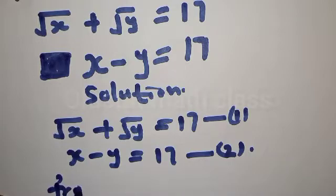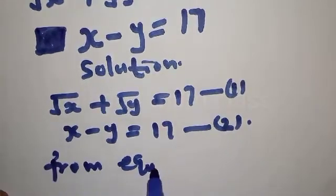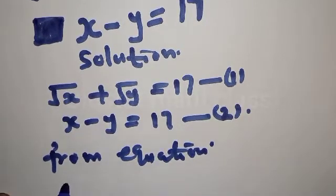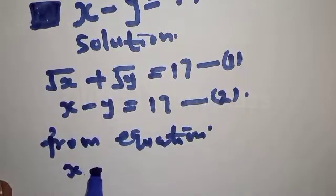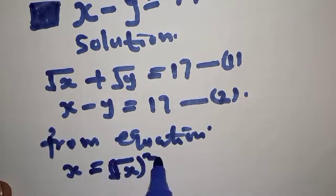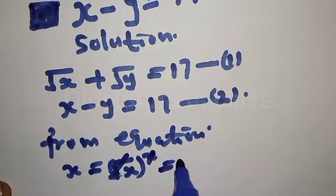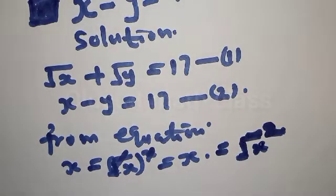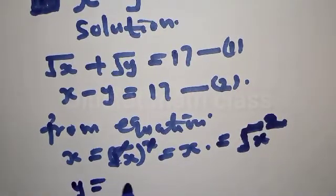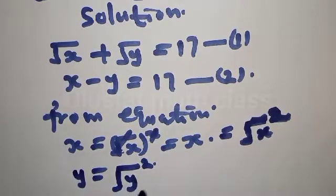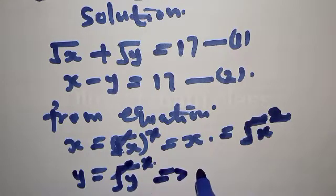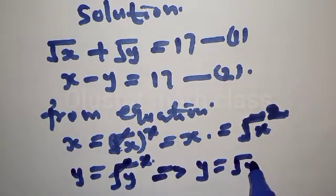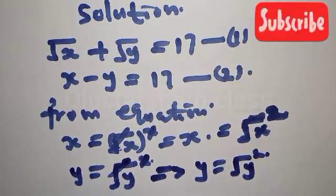From equation 2, we know that X can also be expressed as the square root of X squared — the square cancels the root to give X back. Similarly, Y is the same as the square root of Y squared. So from our expression, Y is equal to the square root of Y squared.